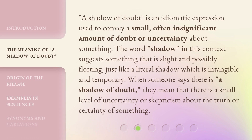A shadow of doubt is an idiomatic expression used to convey a small, often insignificant amount of doubt or uncertainty about something. The word shadow, in this context, suggests something that is slight and possibly fleeting, just like a literal shadow which is intangible and temporary. When someone says there is a shadow of doubt, they mean that there is a small level of uncertainty or skepticism about the truth or certainty of something.